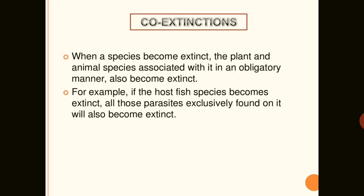Another reason for biodiversity loss is co-extinction. There are many obligate associations among different species in our ecosystem. When one of them becomes extinct, the plant and animal species associated with it obligatorily may also become extinct. For example, a plant-pollinator mutualism results in the extinction of one partner if the other is eliminated. Similarly, if a host fish becomes extinct, all the parasites exclusively found on it will also become extinct.